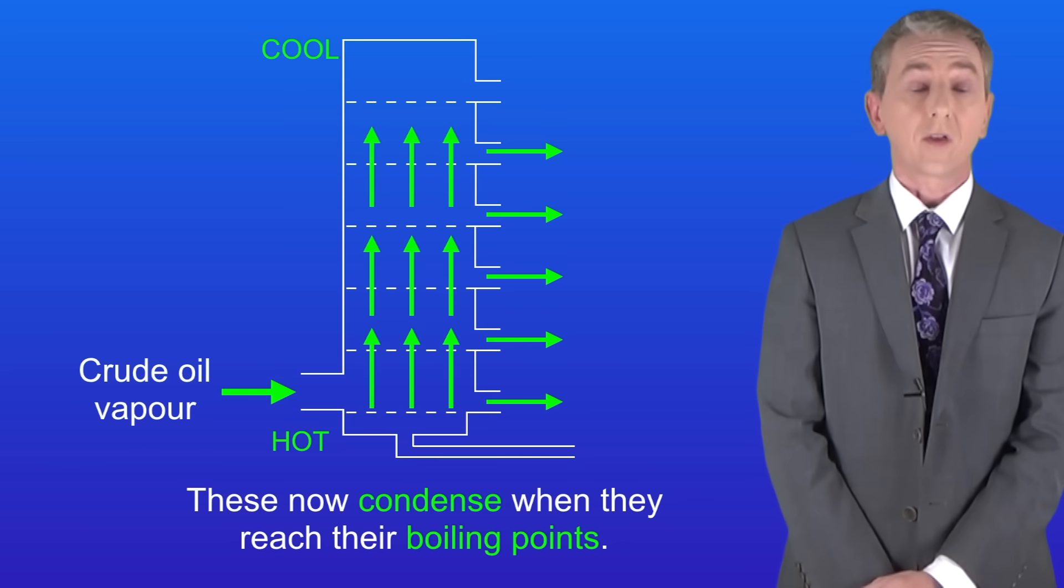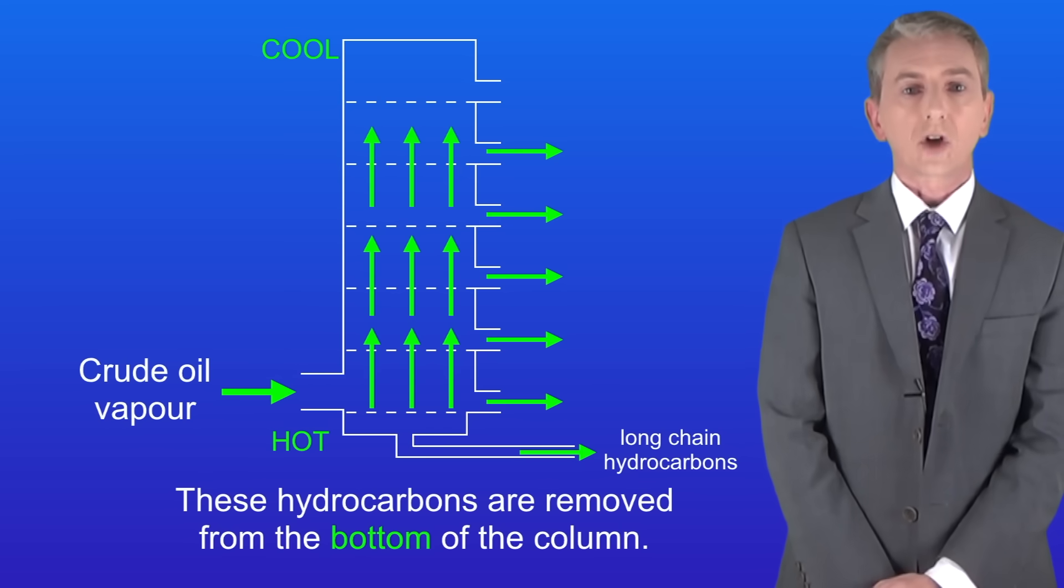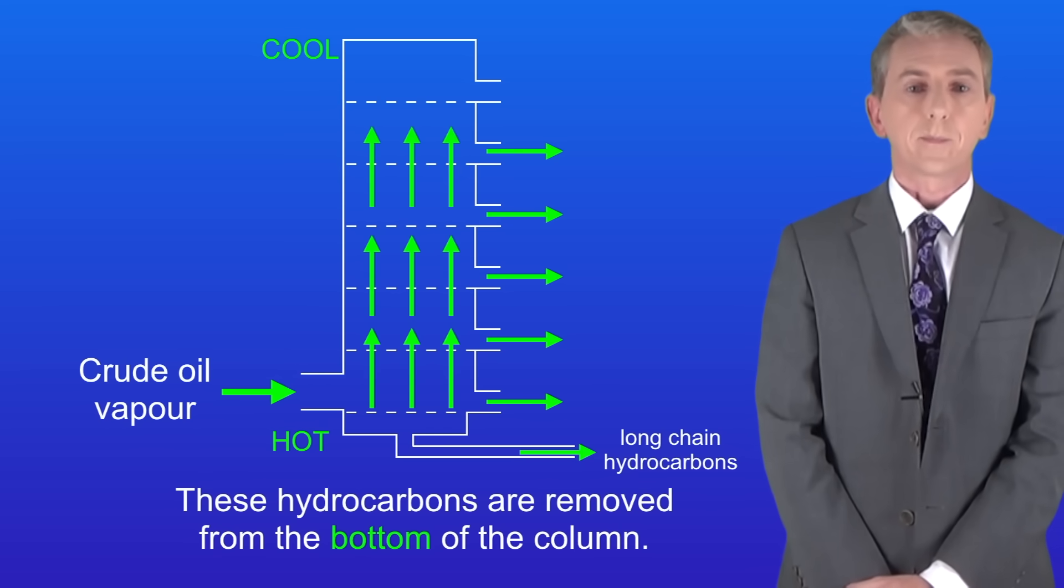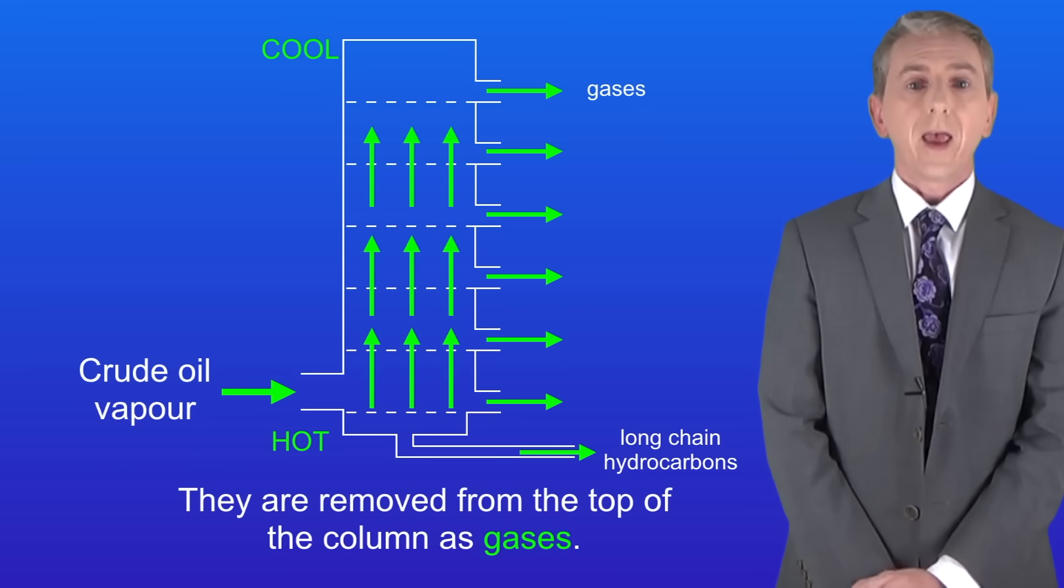There are a couple of further points you need to learn. Very long chain hydrocarbons have very high boiling points. These are removed from the bottom of the column. Very short chain hydrocarbons have very low boiling points and do not condense. They're removed from the top of the column as gases.